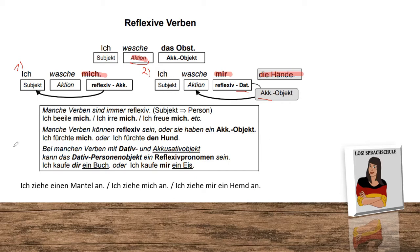'Manche Verben sind immer reflexiv' — some verbs are always reflexive. This means subject reflexiv. For example: 'Ich beeile mich' — I am hurrying up. 'Ich irre mich' — I am mistaken. 'Ich freue mich' — I'm happy. You cannot say 'ich beeile' or 'ich irre' — this is really wrong. This is why reflexive verbs are so important.